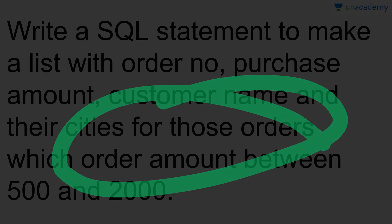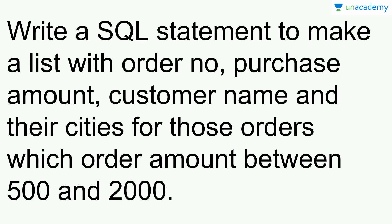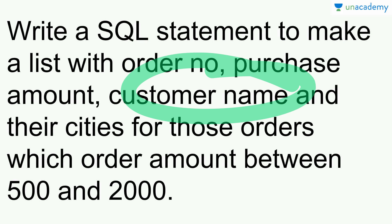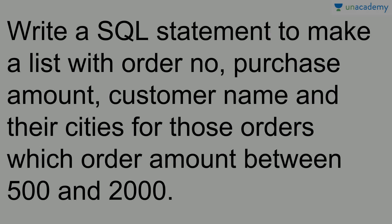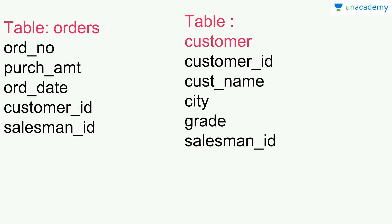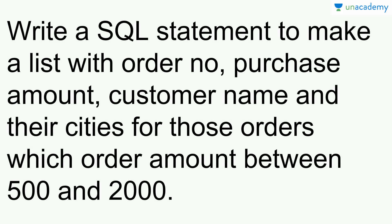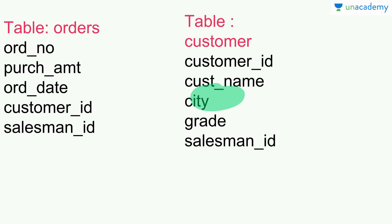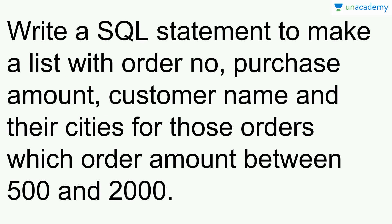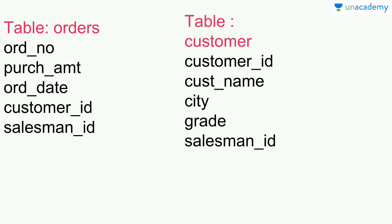Moving to the second question: write a SQL statement to make a list with order number, purchase amount, customer name and their city for those orders where the order amount is between 500 and 2000. We need to print order number, purchase amount, customer name and their cities — two fields from each table.